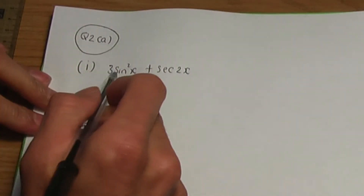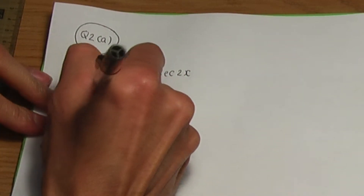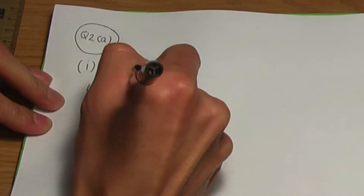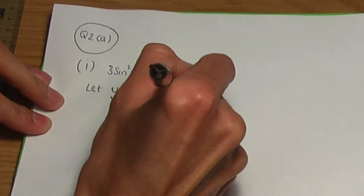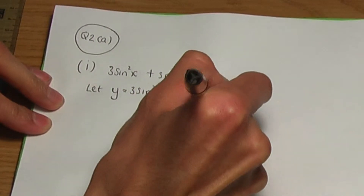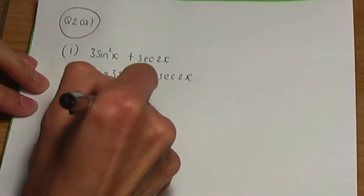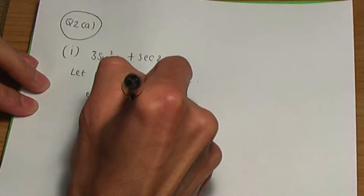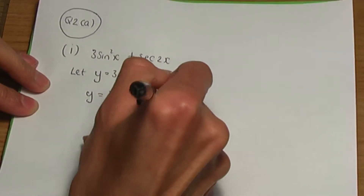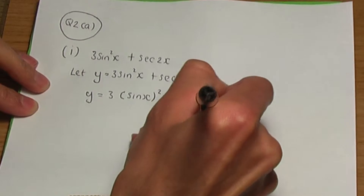We need to differentiate 3 sine squared x plus sec 2x. What I'm going to do first is let y equal sine squared x plus sec 2x. Let me rewrite this as y equals 3, and sine squared x I can write as sine x to the power 2, plus the sec 2x term.